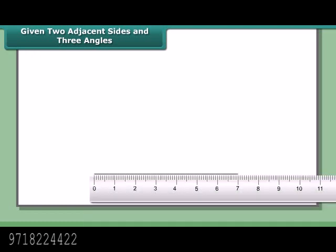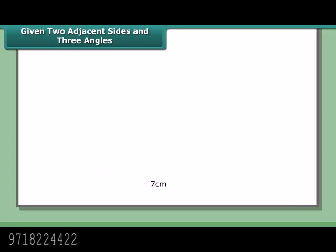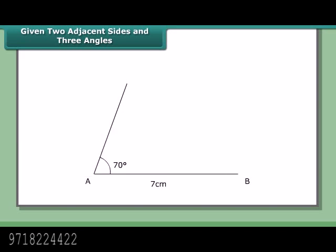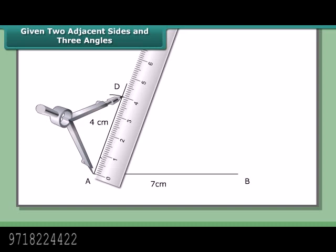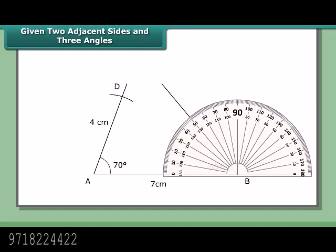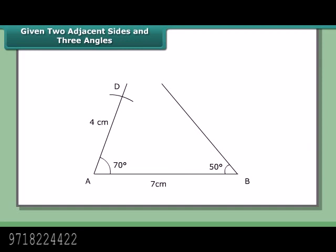Step 1: Draw line segment AB = 7 cm. Draw angle A = 70° using a protractor. With A as center and radius 4 cm, cut an arc on the line. At B, draw an angle of 50°. At D, draw an angle of 100° with a protractor. Let the arms of these angles meet at C. Then ABCD is the required quadrilateral.